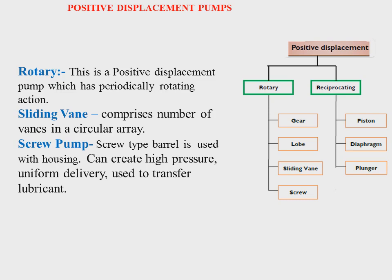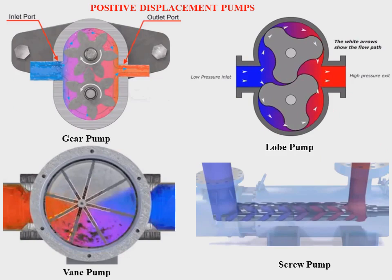Now I am coming to the cross-sectional view of various types of pump. The first one is the gear pump, the second is the lobe pump. The gear pump and lobe pump are more or less the same. In the gear pump, two gears rotate in opposite directions. In the lobe pump, two lobes also rotate in opposite directions. So the constructional features and application of the gear pump and lobe pump are very similar.